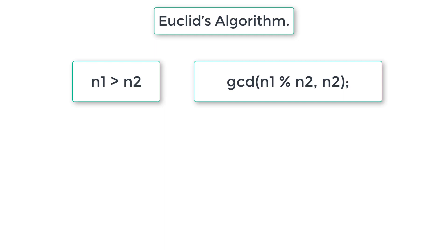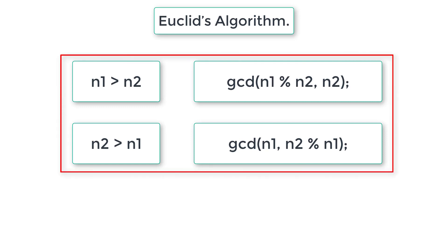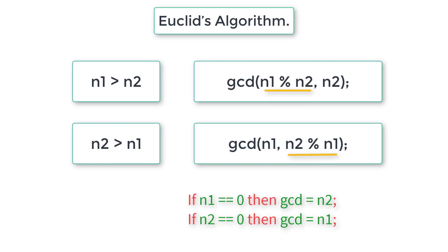In case N2 is greater than N1, we pass N2 modulo N1 in place of N2. We need to recursively call GCD until either N1 or N2 becomes 0. At some point, either N1 or N2 will become 0. If N1 is 0, then GCD is whatever is present in N2. If N2 is 0, then GCD equals whatever value is in N1. This is Euclid's algorithm logic.